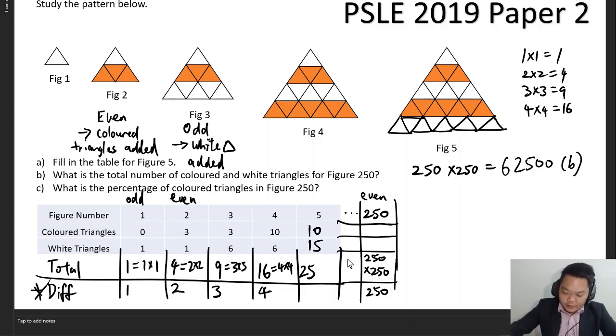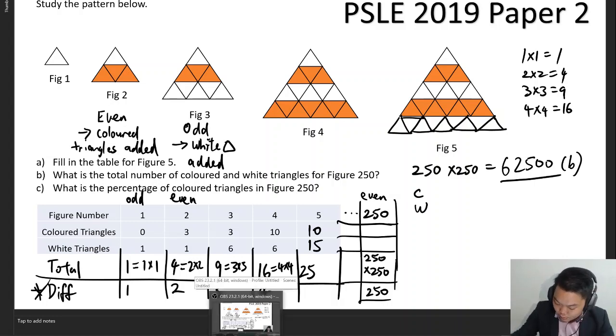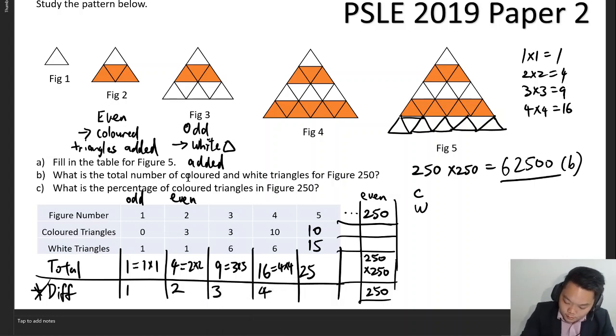With that in mind, since we know the total and we know the difference, if we compare the colored and the white triangles, there will be 250 more over here with 62,500 as the total. So when you compute this using your comparison models, you will find that...